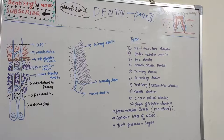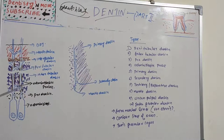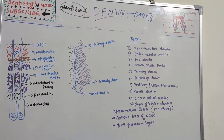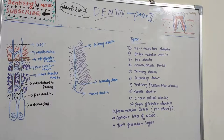Hello everyone, let's continue our dentine sessions. Today's video is about types of dentine. I'll be explaining all the types using a picture. We also have some special features of dentine such as incremental lines of von Ebner, contour lines of Owen, and Tomes' granular layer.